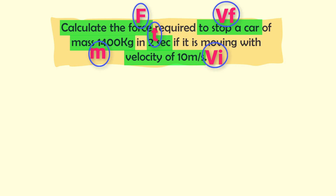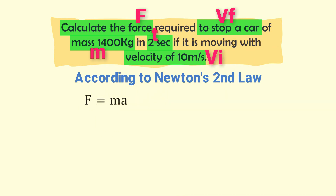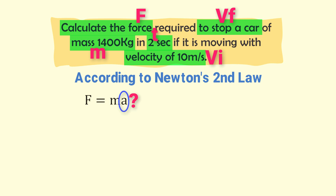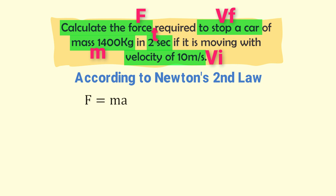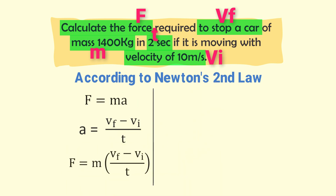There are five variables in this problem and we have to find force F to stop the moving car. According to Newton's second law, F is equal to MA, where the mass of the car is 1400 kg. To find acceleration A, we use: A is equal to VF minus VI divided by time T. Substituting into Newton's second law, F is equal to M times (VF minus VI) divided by time.